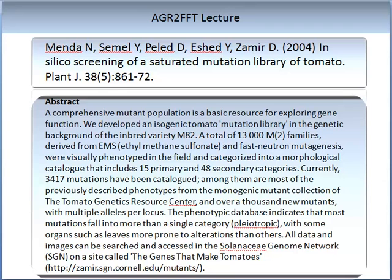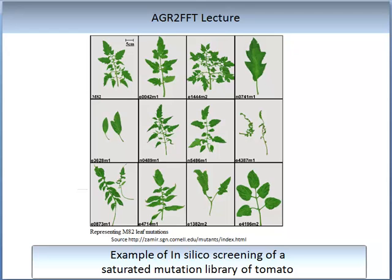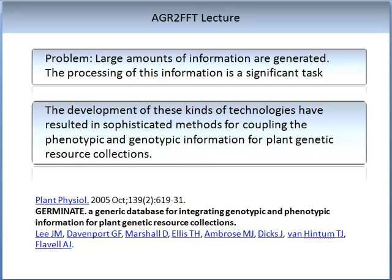On the screen you will see an illustration of the M82 leaf mutations from the paper. These give you an example of in silico screening. As you can see, the shape and area of the leaf changes considerably with the different mutations presented. This kind of screening methodology does have its advantages, but it also has a problem in that there is a large amount of information generated, and this information needs to be processed, which in itself is a significant task. The development of these kinds of technologies has resulted in sophisticated methods for coupling phenotypic and genotypic information for plant genetic resource collections.